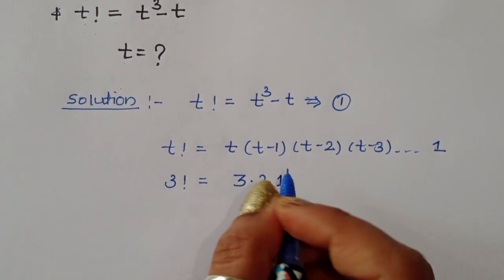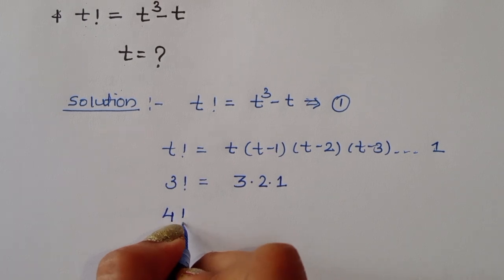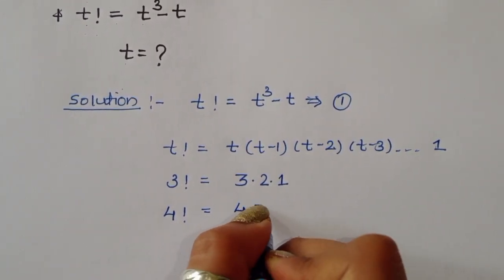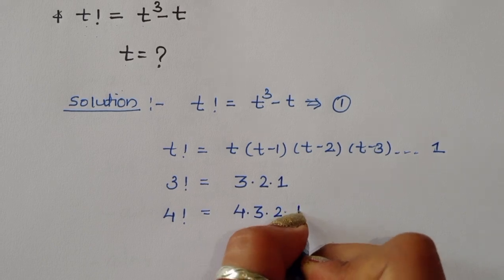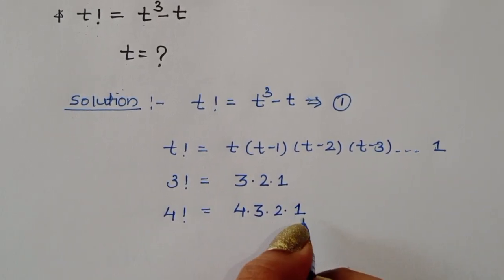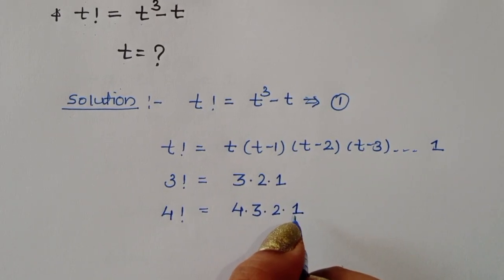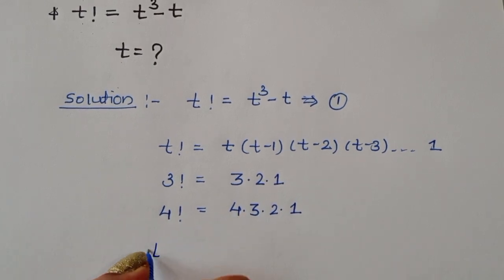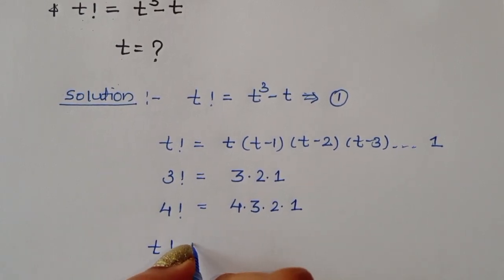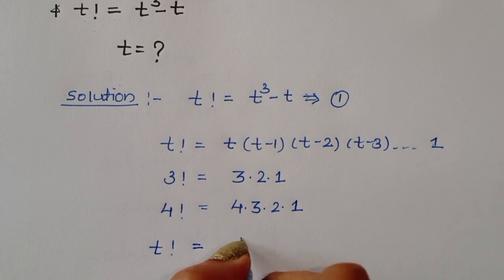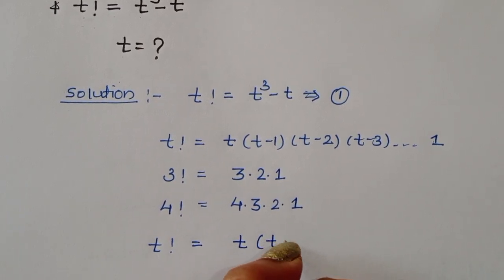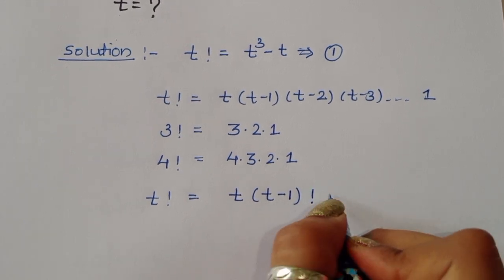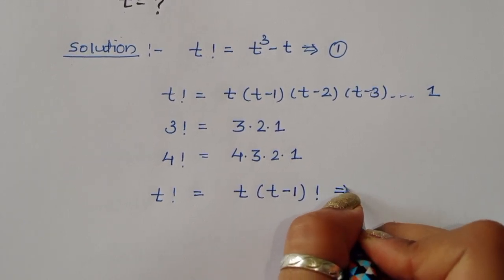Factorial of 4 is equal to 4 times 3 times 2 times 1. In this way, factorial of t can be written as t times (t minus 1) factorial — call this equation 2.